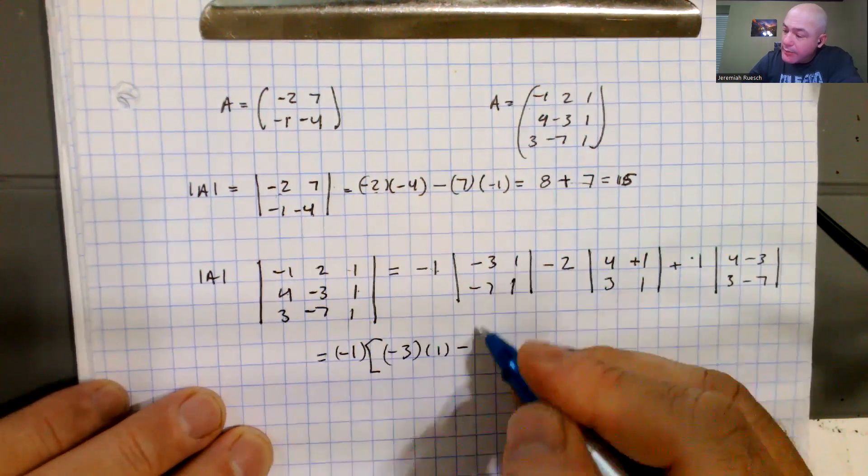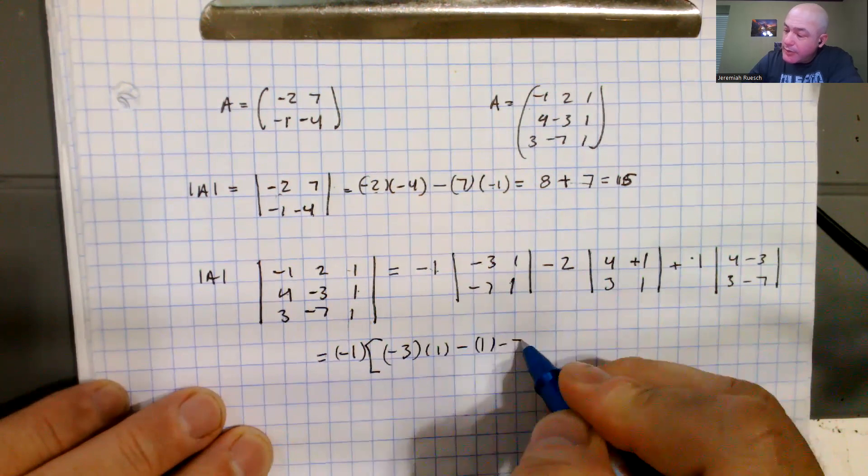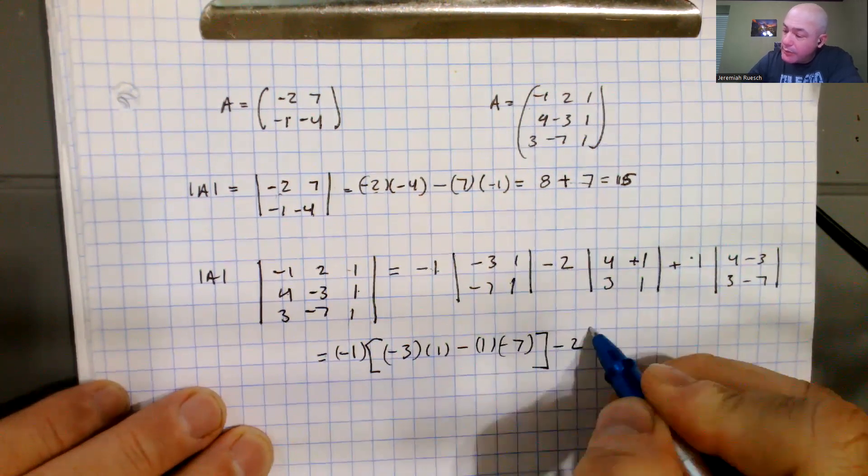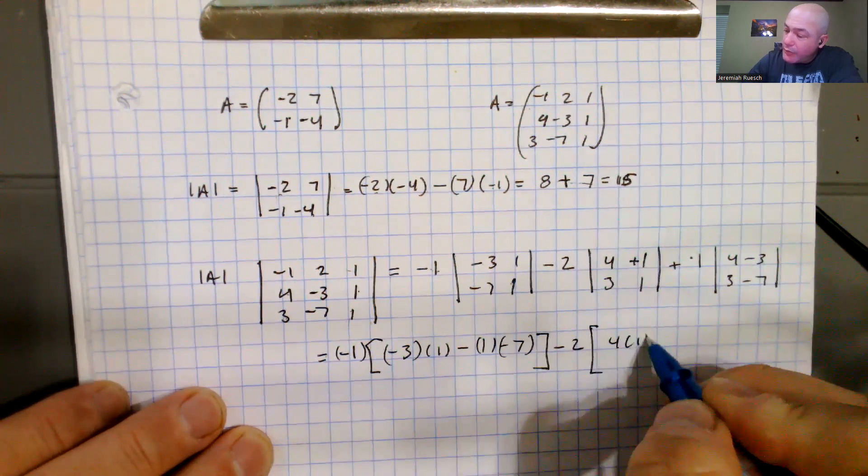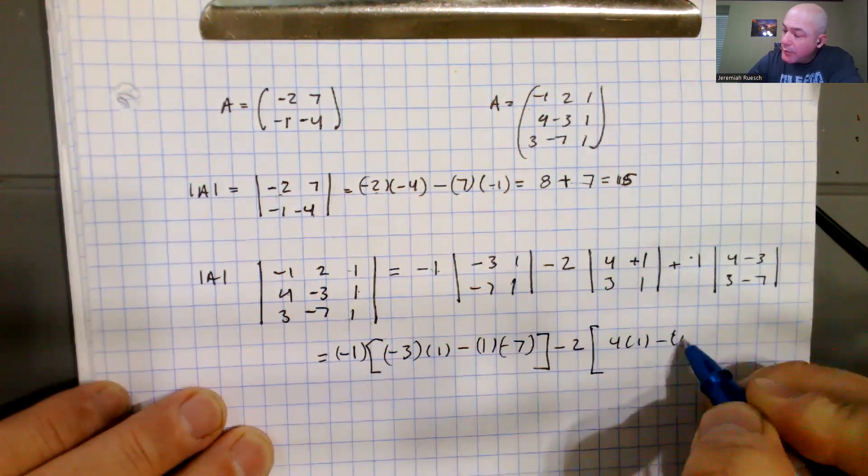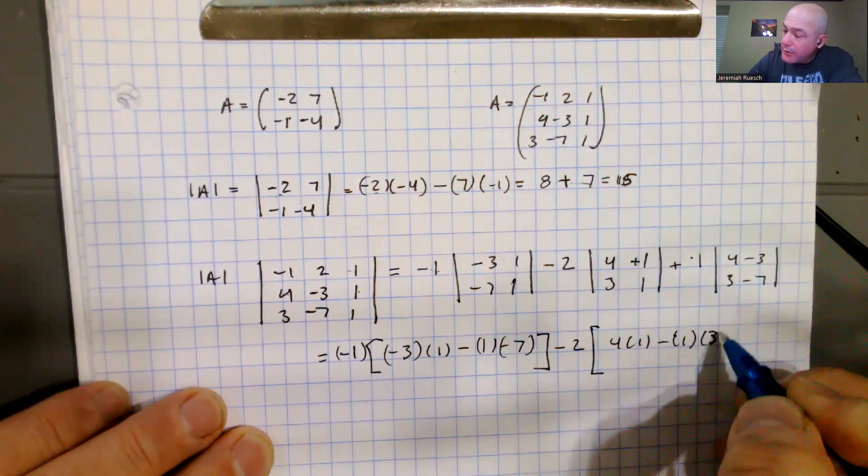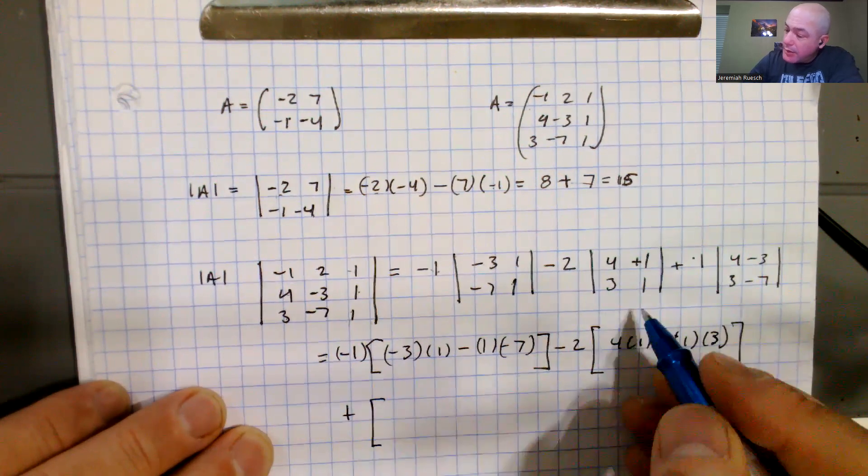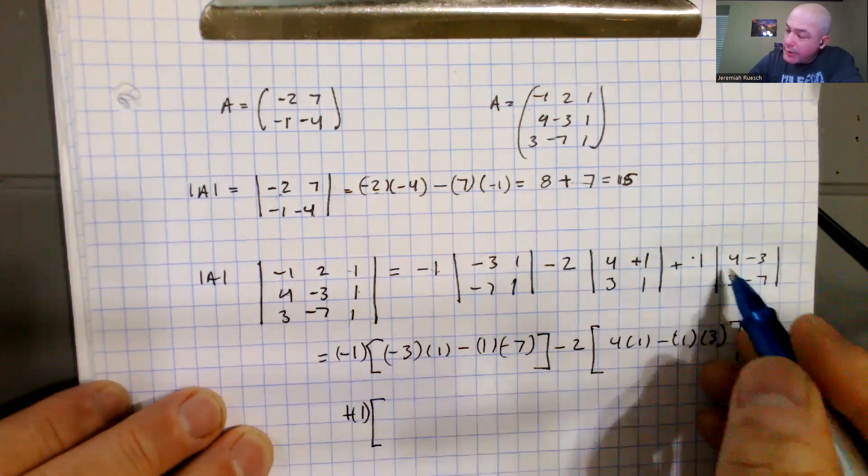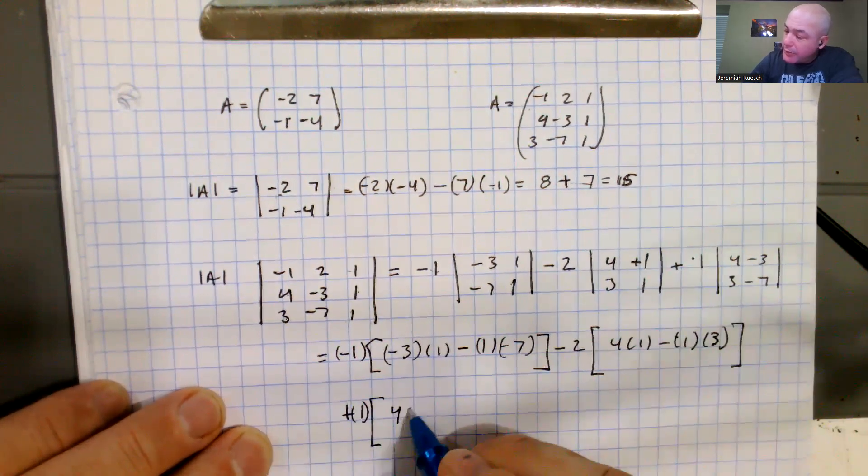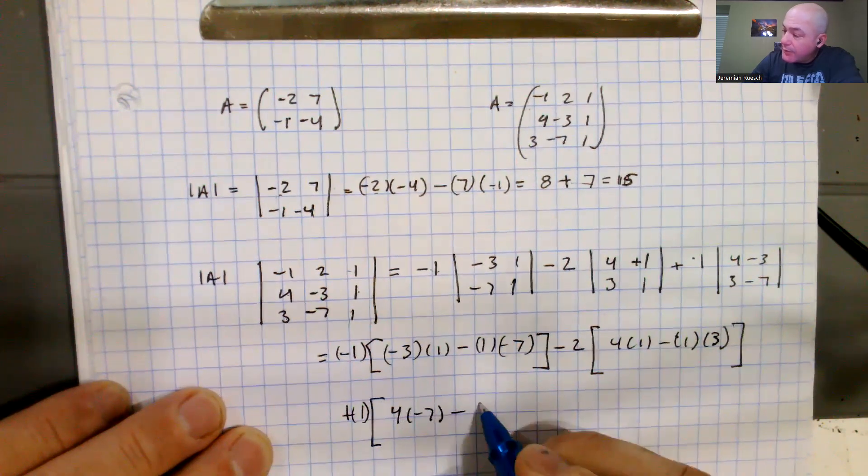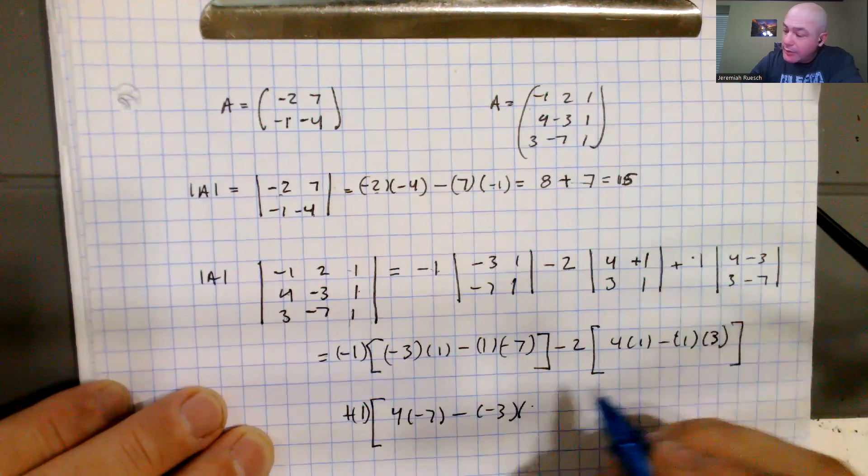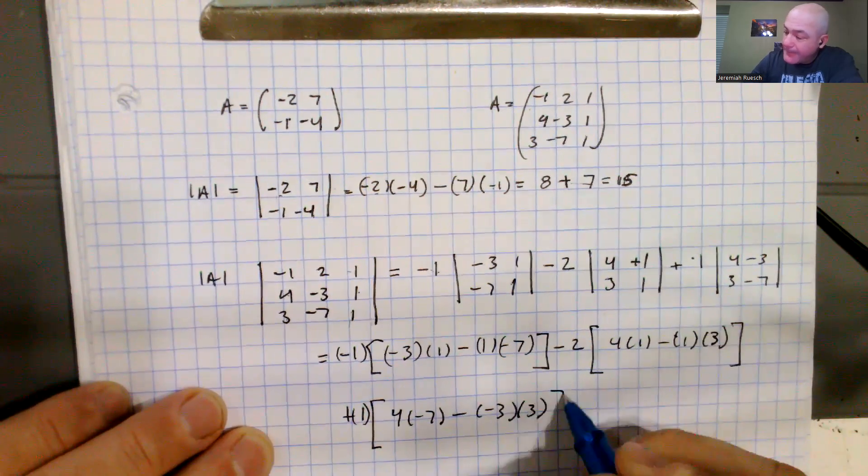minus 1 times negative 7. Okay, so that's that first one, minus 2, 4 times 1, minus 1 times 3. And then we're going to add to that the 1 from here out in front, 4 times negative 7 minus negative 3 times, I have to check my own handwriting, it looks like another 3.